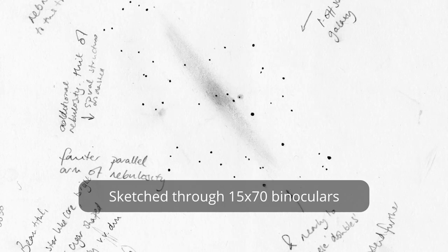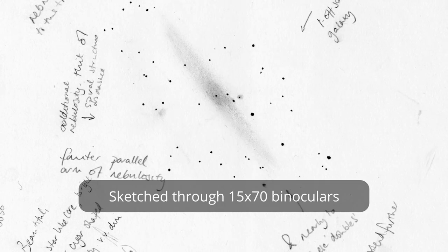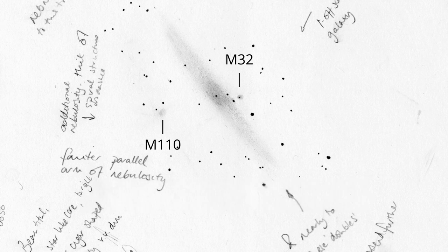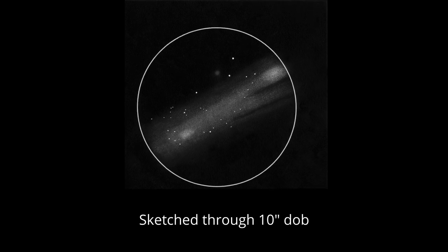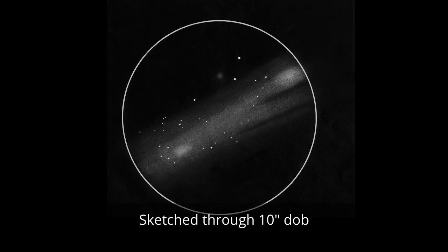With a pair of binoculars you'll definitely be able to see the two satellite galaxies M32 and M110, and if you're imaging or you've got a telescope as a nice dark sky you'll see the spiral arms as well.